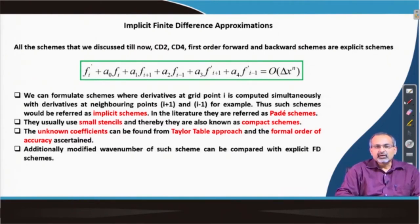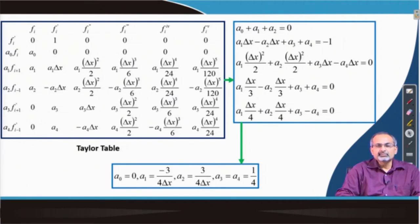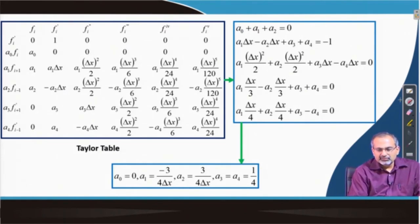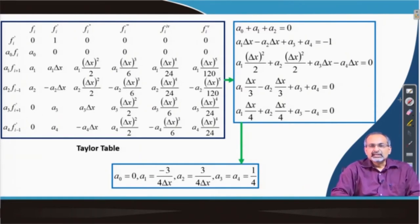We take up an example and try to see how the formulation works out. We are looking at the formulation shown in the previous slide and we have now constructed the Taylor table, populated with all the relevant terms. By now we have become familiar with the Taylor table approach, so it should be a straightforward exercise. If we look at the number of unknowns in this formulation, we have 5 unknowns to be solved, from A-naught to A-4, and therefore we need 5 linear algebraic equations to solve for these unknowns.